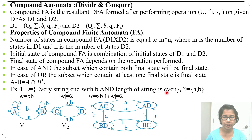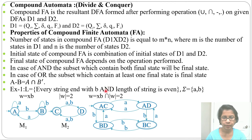Now what will be the final state? Since the operation is AND (intersection), both final states must be present. So BC is the final state. If the operation were OR, then any state containing b or c would be final — like AC, BD, and BC. But since it is AND, only BC is the final state.